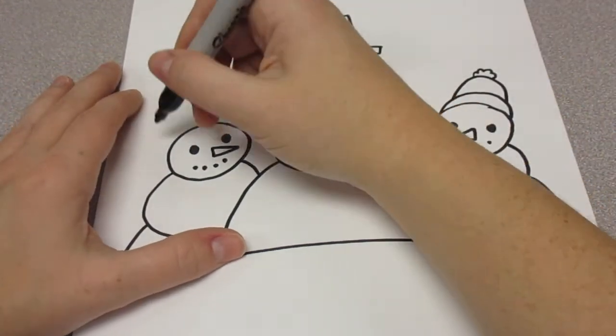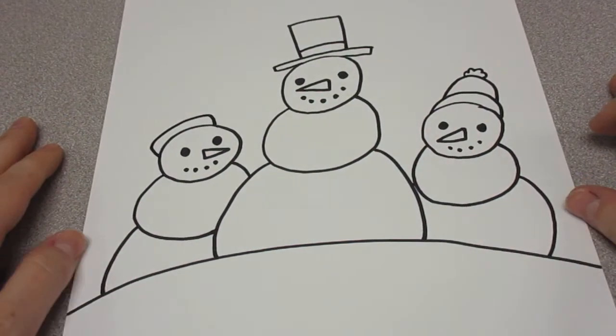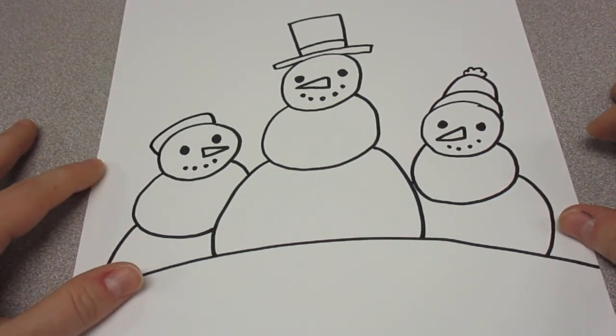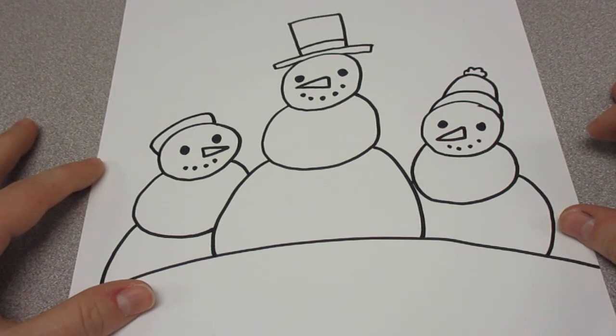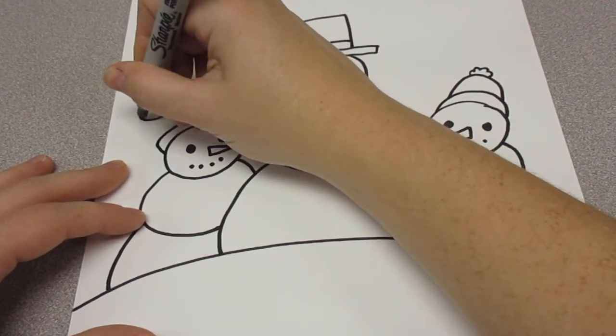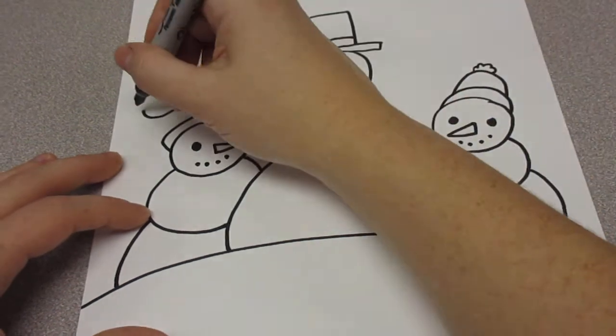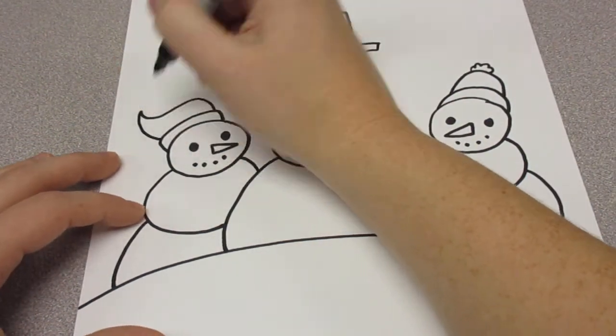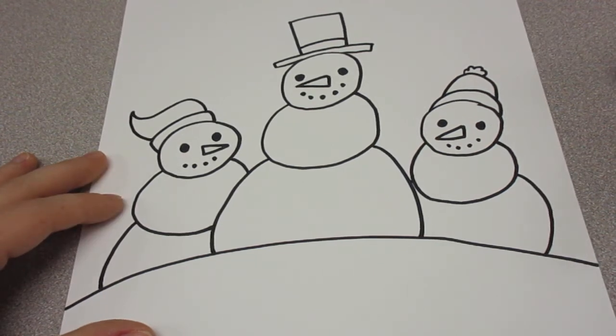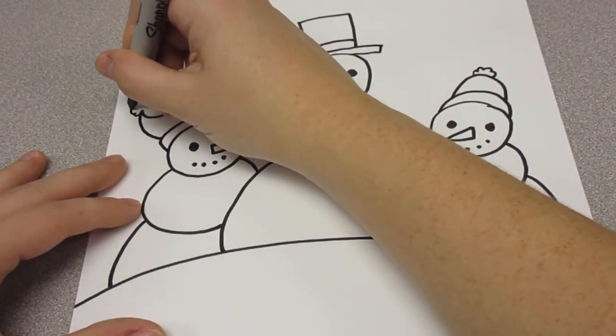And let's give this guy a Santa hat. So we're going to make that shape, kind of like a curved rectangle that goes with his head. And we're going to make an S line, and then a curve. And lastly, another puff ball.